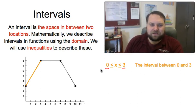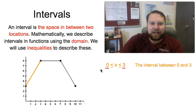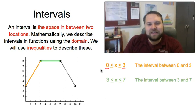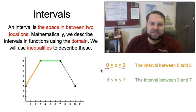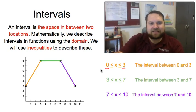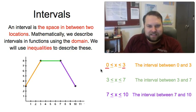We can look at the other spaces as well. If we look at that flatter part of the graph, which is now highlighted in green, that's the interval between 3 and 7 on the x-axis. So we would describe it with that compound inequality: 3 ≤ x ≤ 7. And we can also talk about that final section of the graph highlighted here in purple, which is the interval between 7 and 10, with that compound inequality representing that part of the domain.